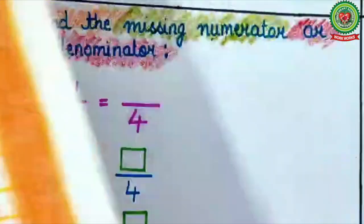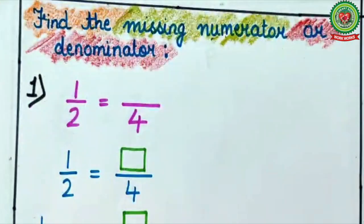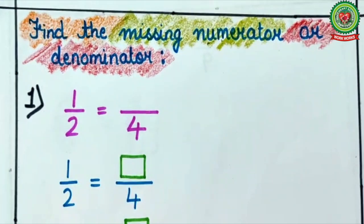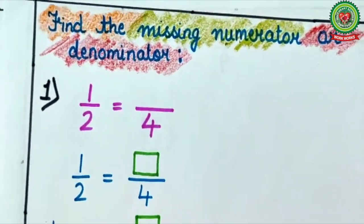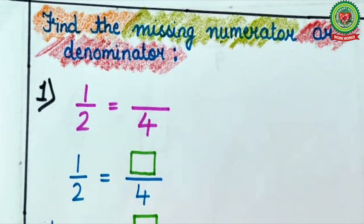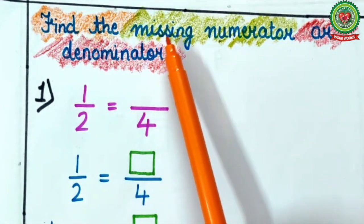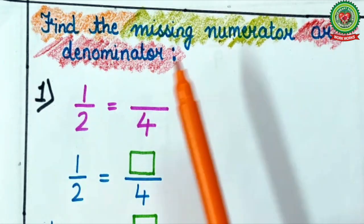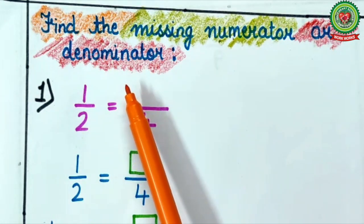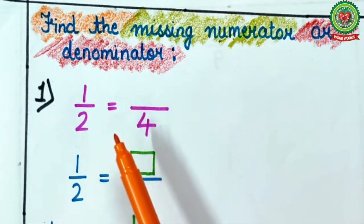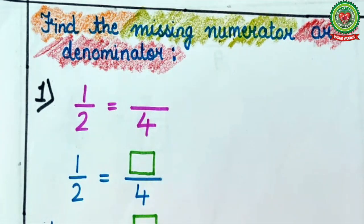As I have already told you, equivalent fractions are the fractions which give the same amount. Today's topic is: find the missing numerator or denominator in a given equivalent fraction.